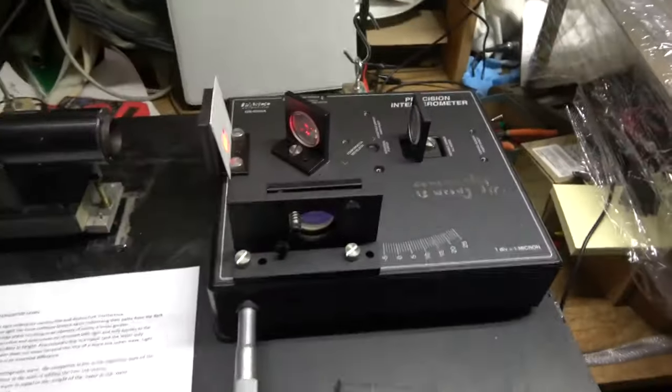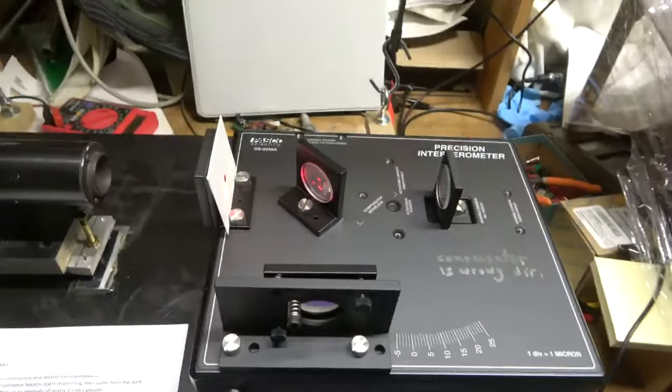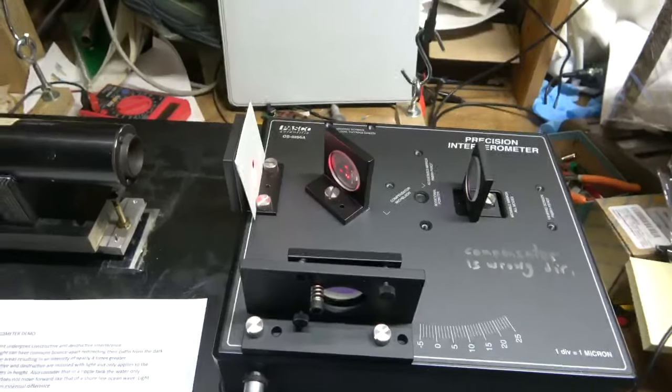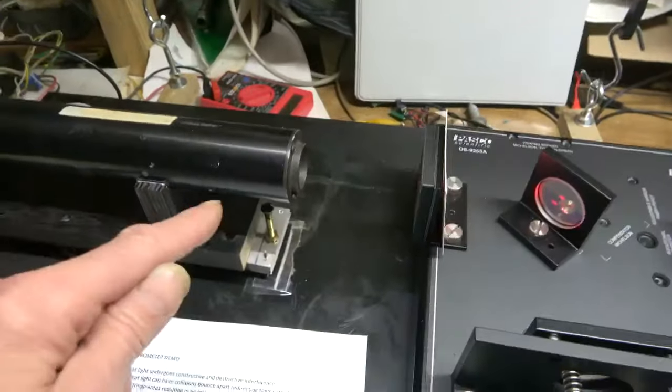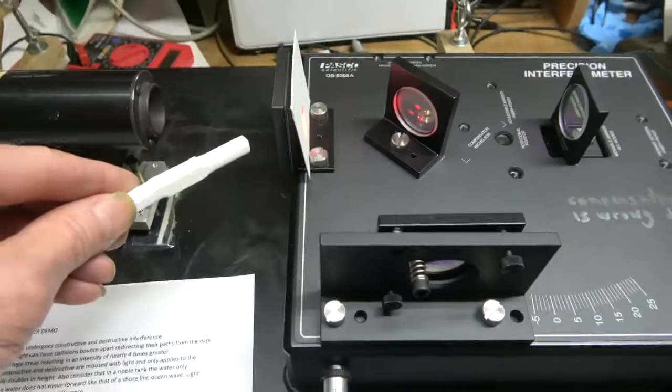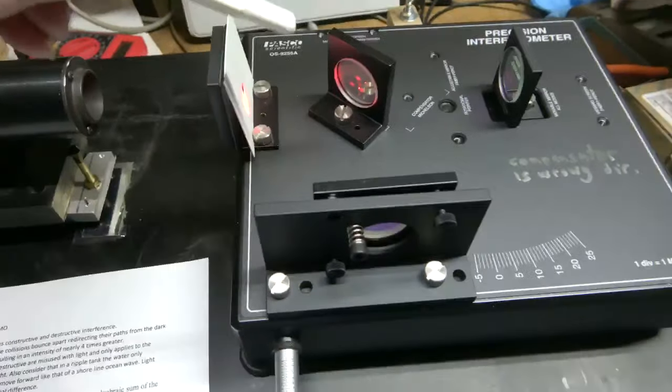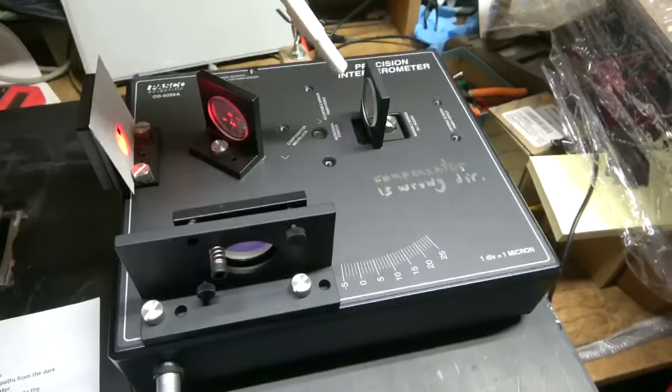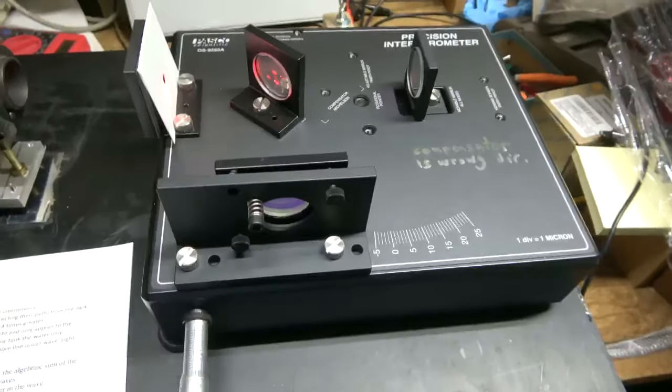This is the Michelson interferometer. I'm going to demonstrate here. We've got the laser beam. We have the lens. I'm bumping it. Beam splitter. Mirror one and mirror two.